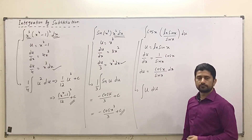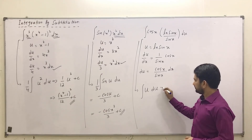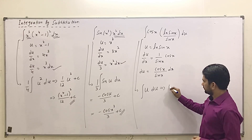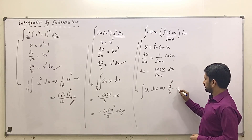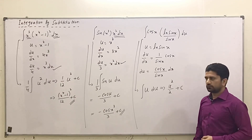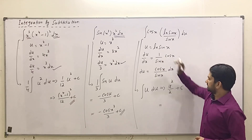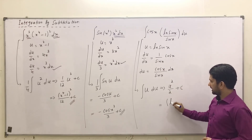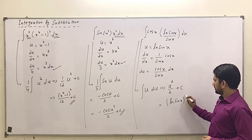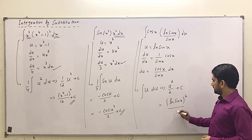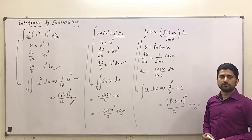Rewriting the integral entirely in terms of u, we have ∫u du. We know the integral of u is u²/2, so the result is u²/2 plus a constant. Substituting back u = ln(sin x), the final answer is [ln(sin x)]² / 2 plus a constant, and this is our solution.